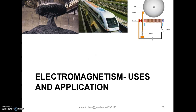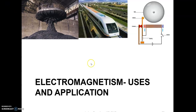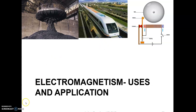Now let's look at electromagnetism and some of its uses and applications. You are going to do some research and answer the question: Can you state three uses of electromagnets? In the pictures above we have a metal scrapyard, a magnetic train, and a doorbell. You are going to find out three other uses of electromagnets.